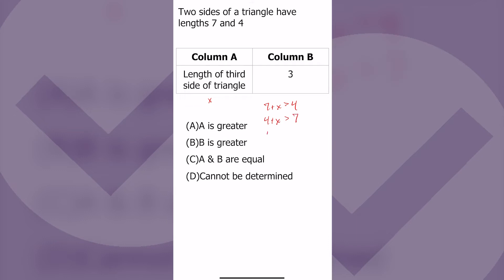And four plus seven has to be bigger than x. It's this middle one that tells us x has to be bigger than three, and so the answer is A, column A is greater. For more practice problems and explanations, check out the link in our bio for a seven day free trial.